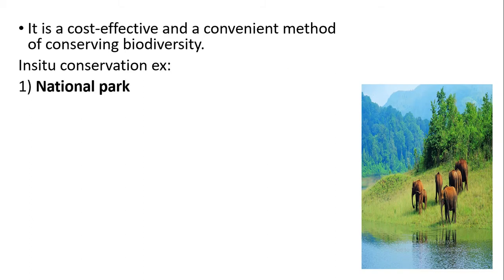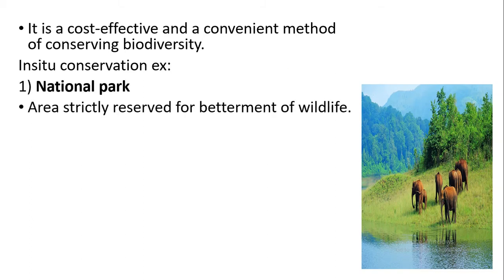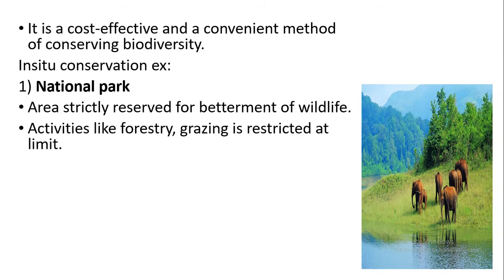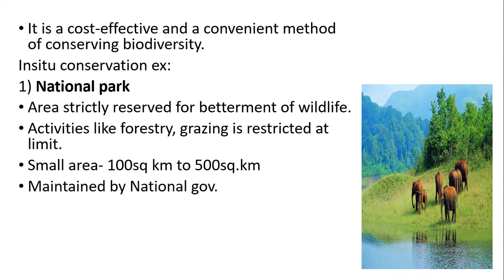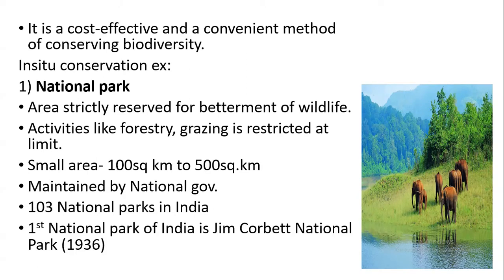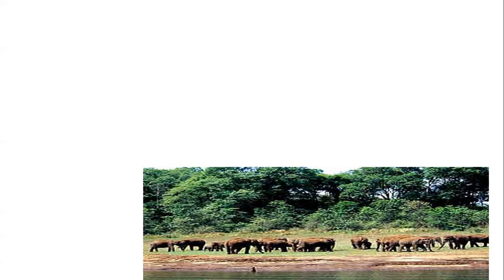Examples of in-situ conservation include national parks. National parks are completely strictly reserved areas for the conservation and betterment of wildlife species. Activities like forestry and grazing are restricted. National parks are spread over a region of 100 to 500 square kilometers and are maintained by the national government. In India there are about 103 national parks. The very first national park in India is Jim Corbett National Park, established in 1936.